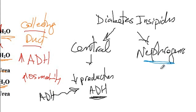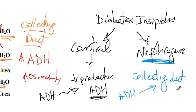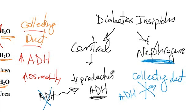In nephrogenic diabetes insipidus, there is normal production of ADH, but the collecting duct does not respond to it. So even if you administer ADH, it will not correct urine osmolarity. To summarize: nephrogenic DI is due to the collecting duct not responding to ADH, while central DI is due to low production of ADH — and administering ADH corrects osmolarity only in central DI.